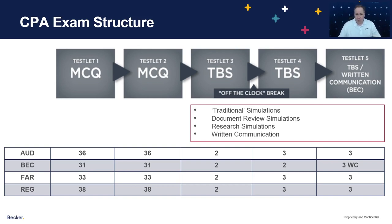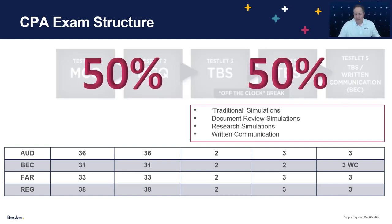There's one more important thing to know about the exam: the weighting — how much of your score is driven by the different areas. It's really easy to keep in check: it's 50-50. So 50% is driven by the multiple choice questions, effectively your performance on the first two testlets. The other 50% comes from the simulation testlets three, four, and five. The key takeaway is that the multiple choice questions as a whole and the simulation questions as a whole are equally important, and therefore deserving of equal attention as you prepare for the CPA exam, because both are critically important to passing.